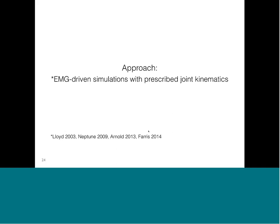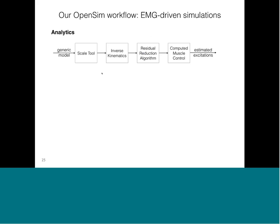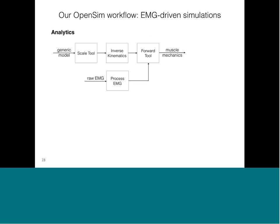Let's revisit how we adjusted the original OpenSim workflow to meet our needs. Because we did not want to predict muscle excitations from computed muscle control, we did not use CMC. And because we're not using CMC, we were also able to remove the residual reduction algorithm. In place of predicted EMG from CMC, we processed raw EMG from our experiment to obtain muscle excitation signals, which we used to drive our forward tool. We also took joint angles from inverse kinematics to prescribe kinematics in our model, and running the forward tool allowed us to generate estimates of muscle tendon mechanics.